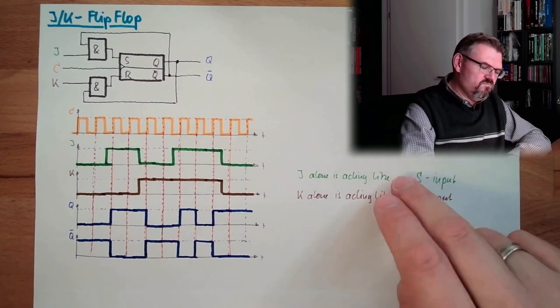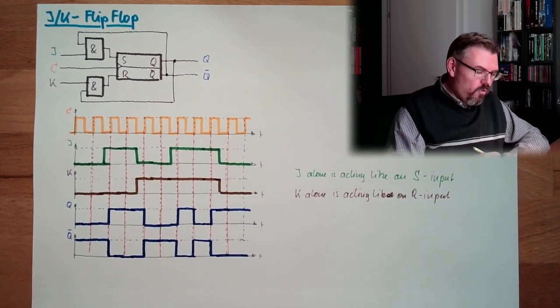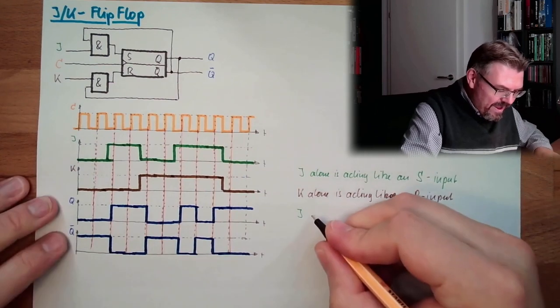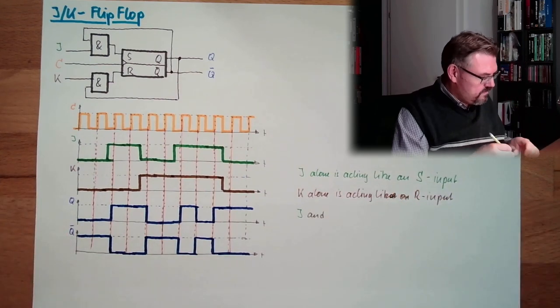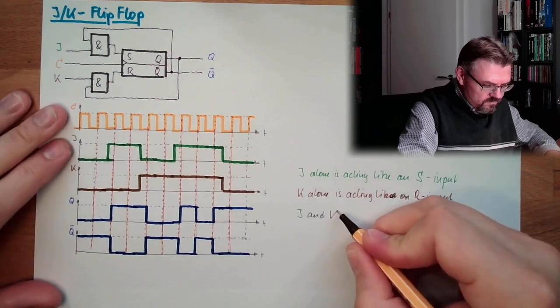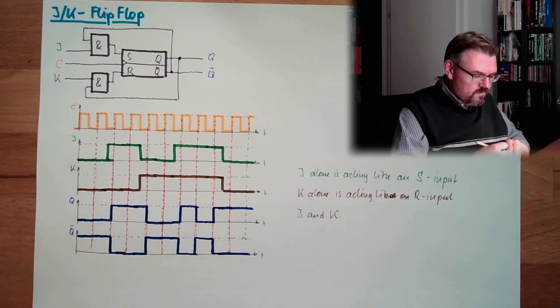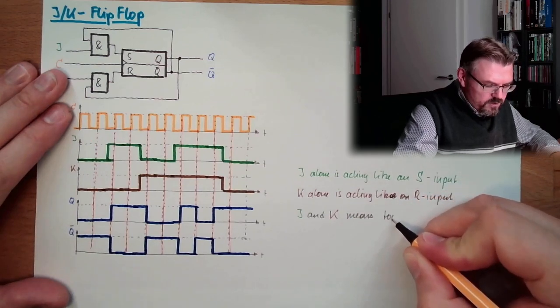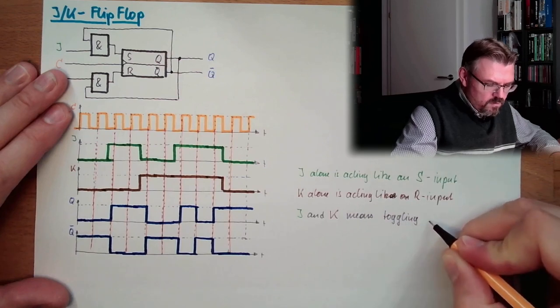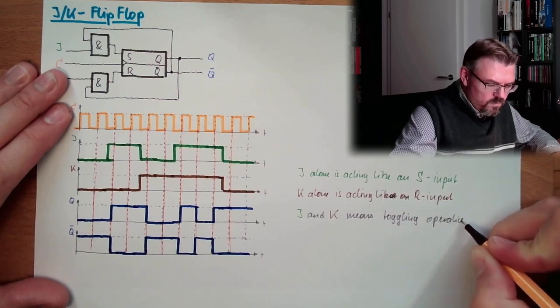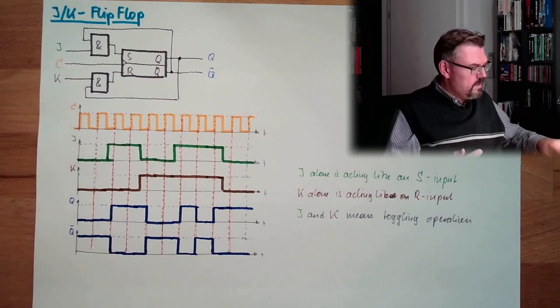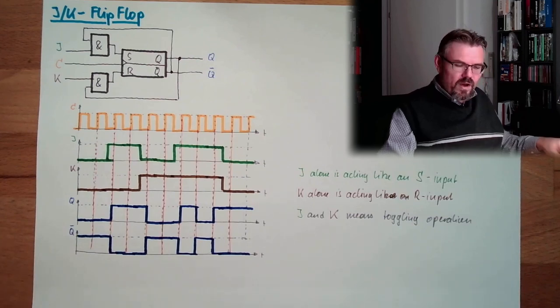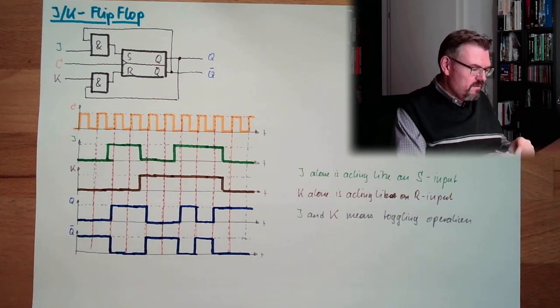I don't know. So J and K both, J and K, means toggling operation. So I can select the behavior with a JK input. I can select the behavior of my flip-flop.